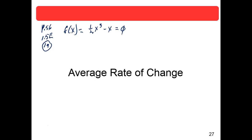Now, what was your first inclination? Factor it. I think that's the way to go, because here we have a polynomial. It has a fractional coefficient — no sweat there, still a polynomial. And when you have a polynomial on this side with degree two or greater, and zero on the other side, the first best guess: factor. So let's factor out x, and what does that leave you with? One half x squared minus one equals zero — that's a rather nasty looking situation.